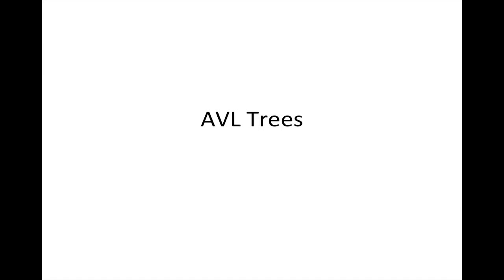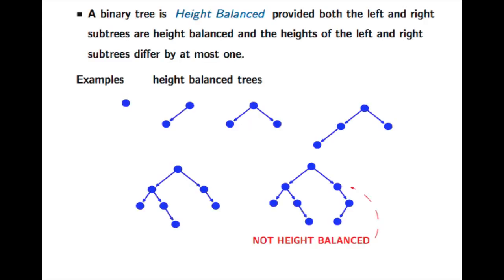This is an explanation of AVL trees. AVL trees are binary search trees where we control the depth of the tree so it doesn't get too big. A height-balanced tree is a tree where the depth of the left side and the depth of the right side differ by at most one.